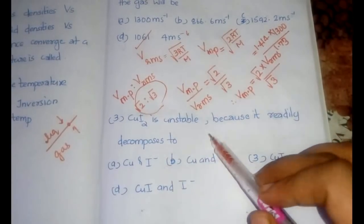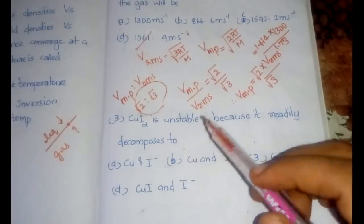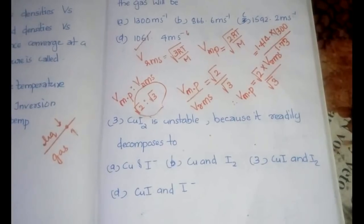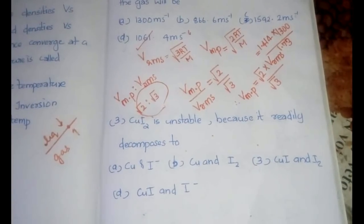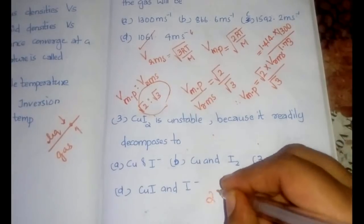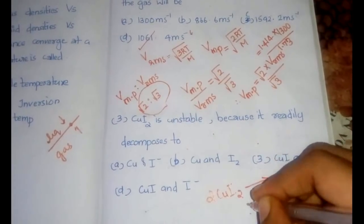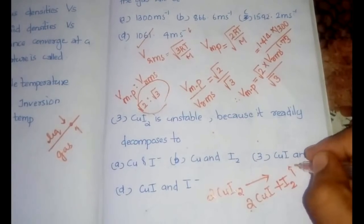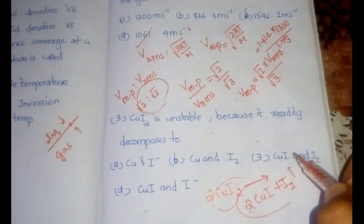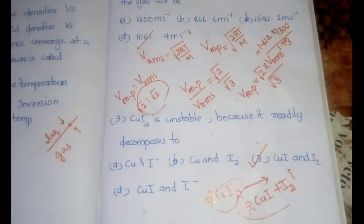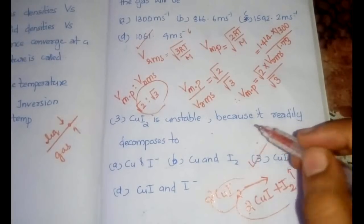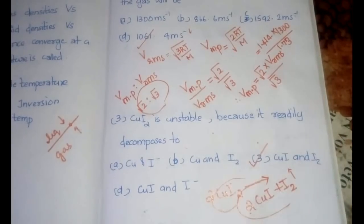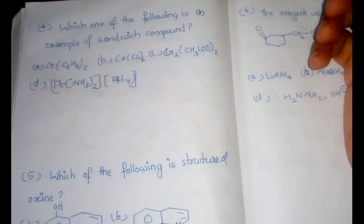The next question is from inorganic chemistry: CuI₂ is unstable because it readily decomposes. This is a simple question. The equation is: 2CuI₂ → 2CuI + I₂. So option 3 is the answer: CuI₂ is unstable because it readily decomposes to CuI and I₂.